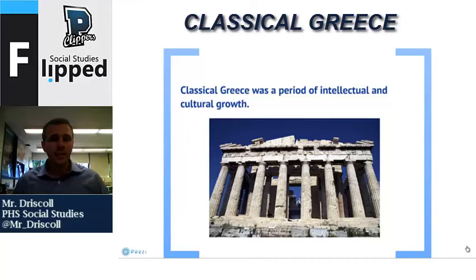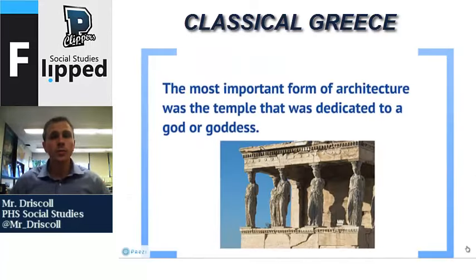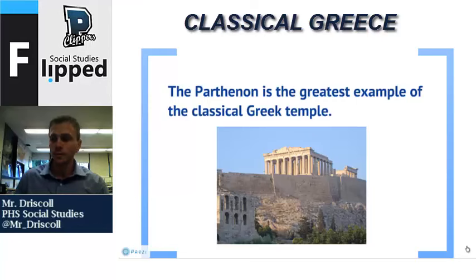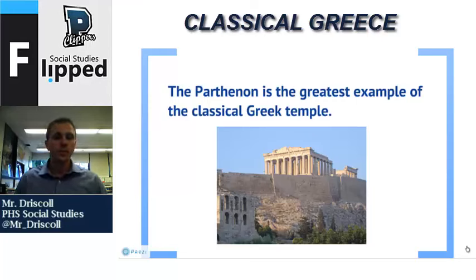Moving on to the intellectual and cultural aspects of classical Greece — it was known as a period of growth, partly due to expansion in military power, but also marked by many intellectual and cultural developments. The most important form of architecture at the time was the temple, dedicated to a god or goddess. The Parthenon is the greatest example of a classical Greek temple, dedicated to the goddess Athena, and it expressed pride in the city-state itself. The architecture represented a classical style characterized by calmness, clarity, and freedom from unnecessary detail, as we can see in the open nature of it and the columns.